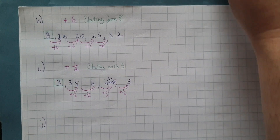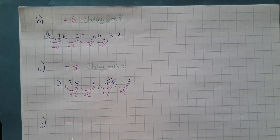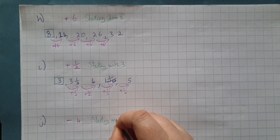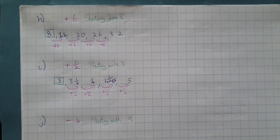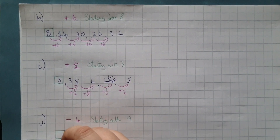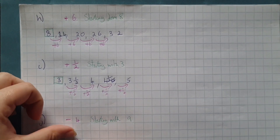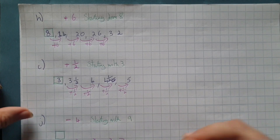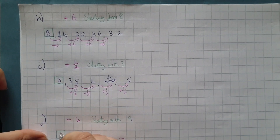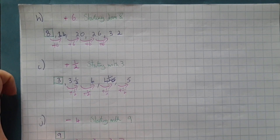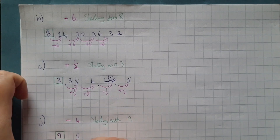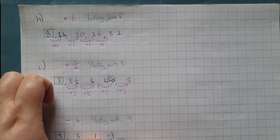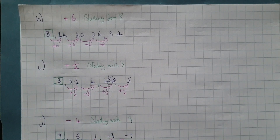For the final example: this time we are going to be subtracting four and we're going to be starting with nine. I'm starting with nine — nine subtract four is five, five subtract four is one, one subtract four is minus three, minus three subtract four is minus seven. So here we have generated the sequence.